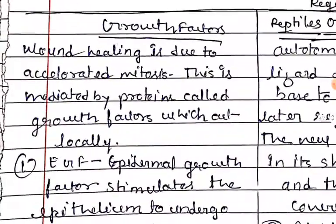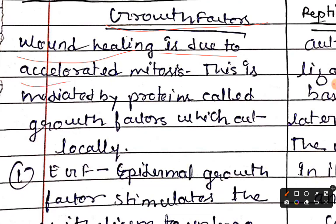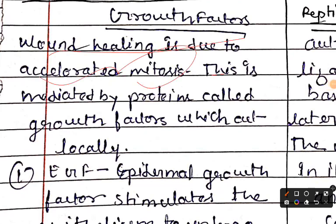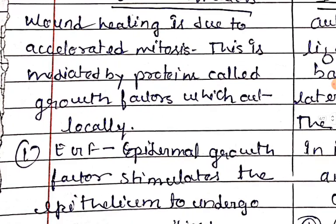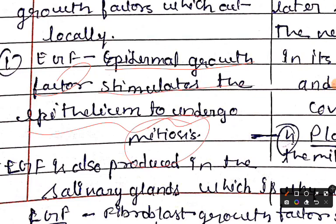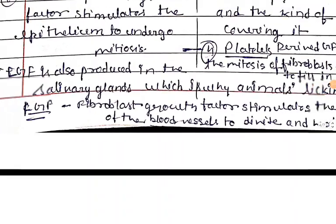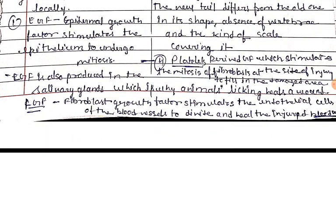Next we will discuss the growth factors responsible for regeneration. Wound healing is due to accelerated mitosis, mediated by proteins called growth factors which act locally. EGF, or Epidermal Growth Factor, stimulates the epithelium to undergo mitosis. EGF is also produced in the salivary glands, which is why animals lick their wounds — it helps in recovery.